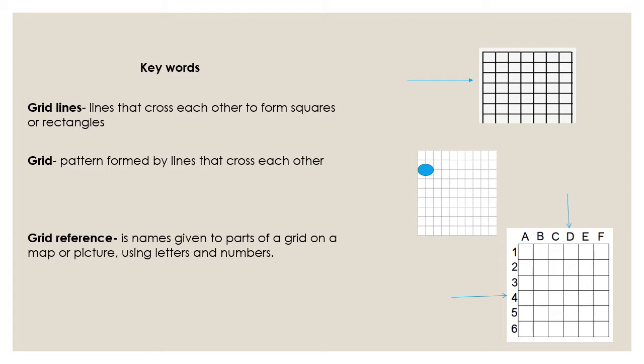If you look at the picture on your right, you can see that on the top part we have our letters, and then on the left side we have our numbers. Let's look at our letters. On top, every block will have its own letter. So we have A, B, C, D, E, and F.